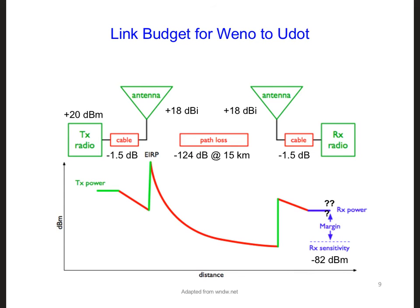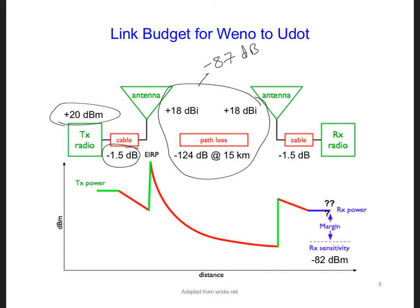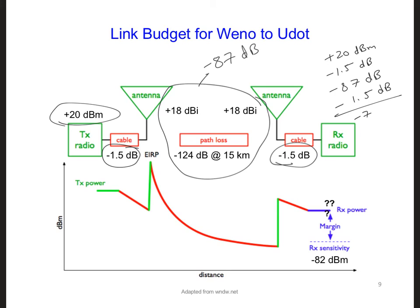Now we can construct the total link budget from Ueno to U-dot. We start with 20 dBm transmitting power, minus 1.5 dB cable loss. The gain and path loss together equal −87 dB, which takes into account the receiver and transmitter antenna gains and the propagation losses. At the receiver, we subtract another 1.5 dB cable loss. Adding it all: 20 dBm − 1.5 dB − 87 dB − 1.5 dB = −70 dBm. That's the expected received signal level.